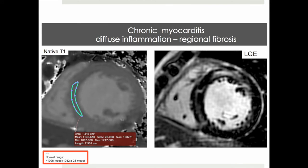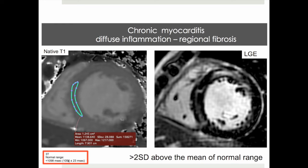Patients with chronic myocarditis have a combination of diffuse as well as regional disease, evidenced by native T1 values which are more than two standard deviations above the mean of the normal range — that is, they are abnormal — as well as evidence of regionally separated tissues, myocardial fibrosis on late gadolinium enhancement.